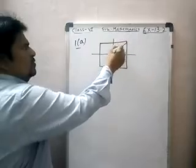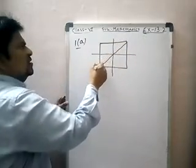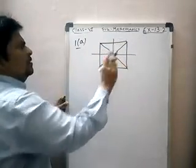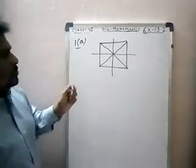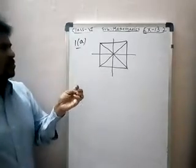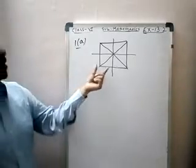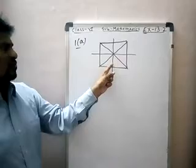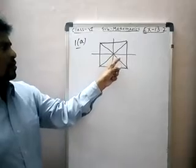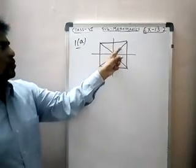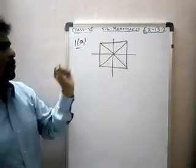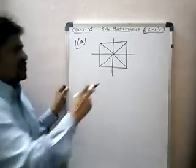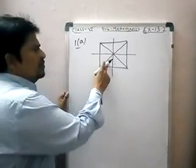Next, we draw the diagonals. This is the first diagonal and this one is the second diagonal. How many lines are drawn in this figure? Four lines. One, two, three and four — four lines. What happens in this figure? How many parts are divided? Eight parts.